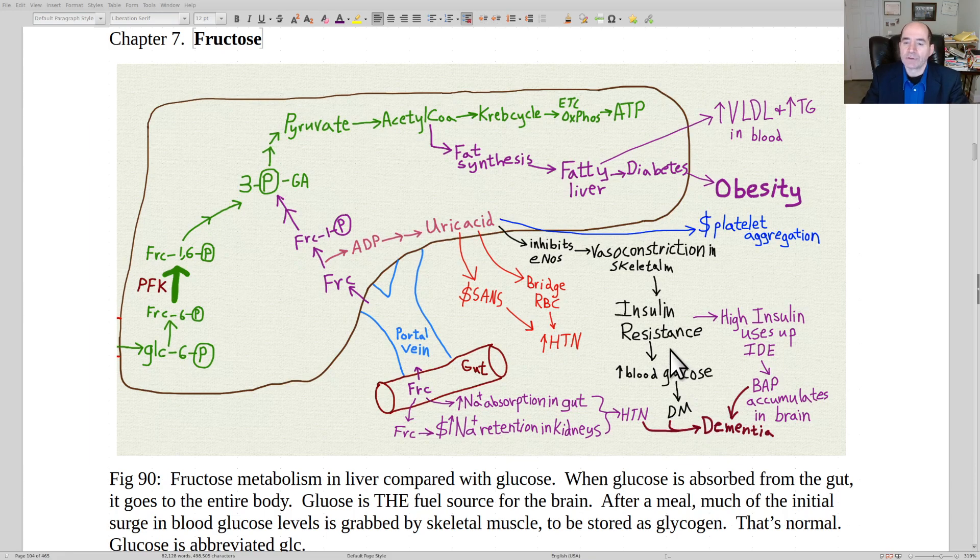Because the insulin is not able to exert its effect, increased insulin gets produced. When you get increased insulin in the blood, it's called hyperinsulinemia. There's an enzyme called insulin degrading enzyme that's used to remove the insulin from the blood. It has high affinity for insulin but it also removes beta amyloid from the blood.